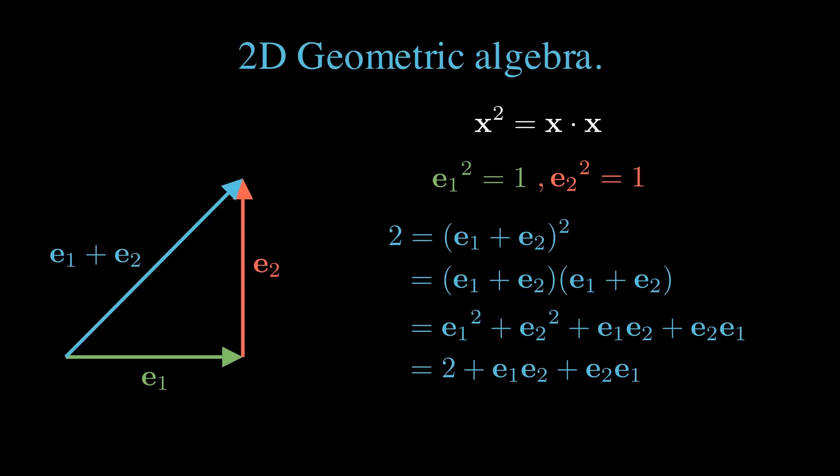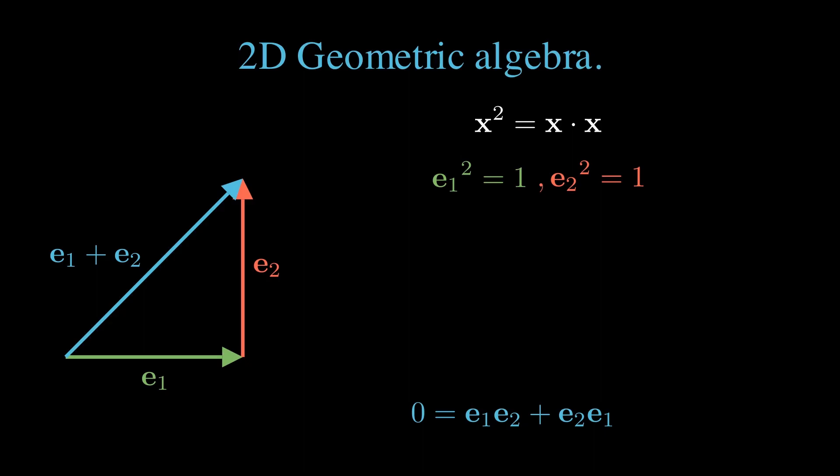We have 2 on each side, which cancels out, leaving 0 equals e1 e2 plus e2 e1. We may rewrite this as e2 e1 equals minus e1 e2.